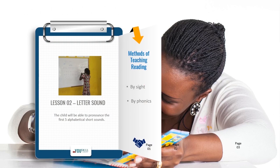Previously, whenever a child is being taught to read, after teaching the child ABC, the next thing is to teach the child two-letter words. That is where there is S-O: SO, G-O: GO, H-E: HE, L-O: LO, M-E: ME, B-Y: BY, M-Y: MY. The child will have to recite all of these two-letter words, and whenever he comes across them in a passage or text, he is supposed to remember them and then read. That is reading by sight.